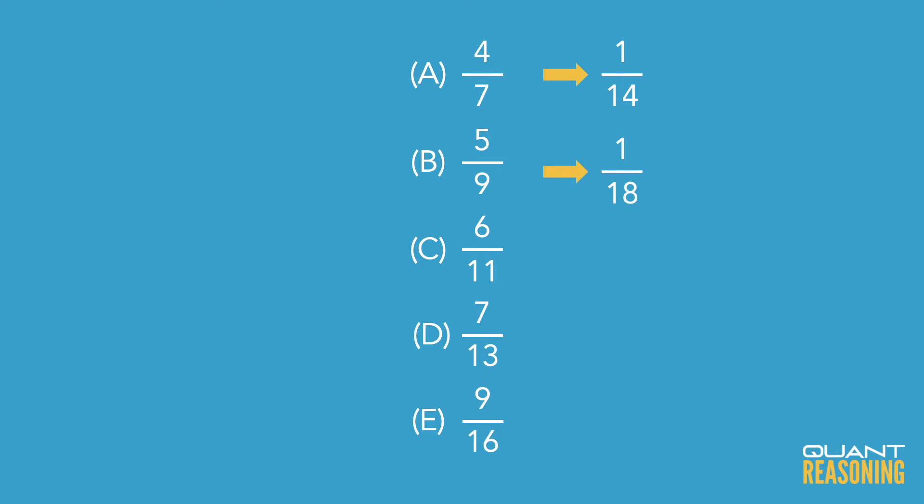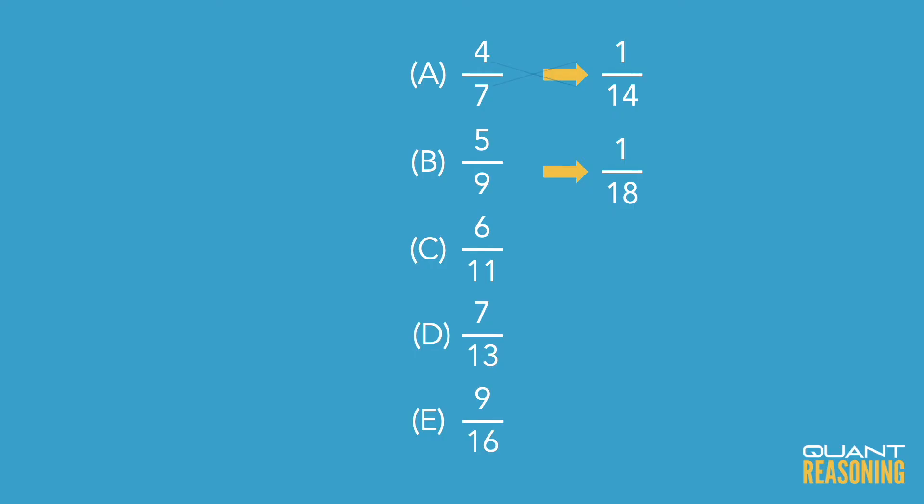Now the question was asking which answer choice is closest to half and we can already see that answer choice B is closer than answer choice A because answer choice B is only one eighteenth away from half. And remember answer choice A was one fourteenth away from half. So since one eighteenth is a smaller fraction than one fourteenth, B is closer than A, we can go ahead and eliminate A at this point.